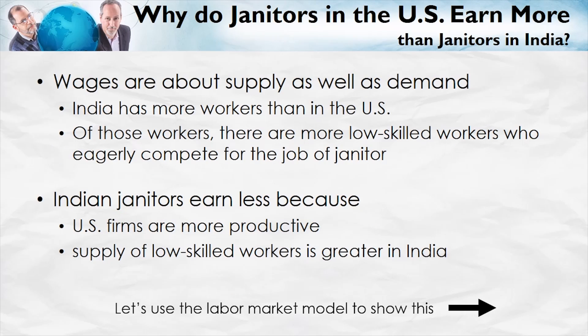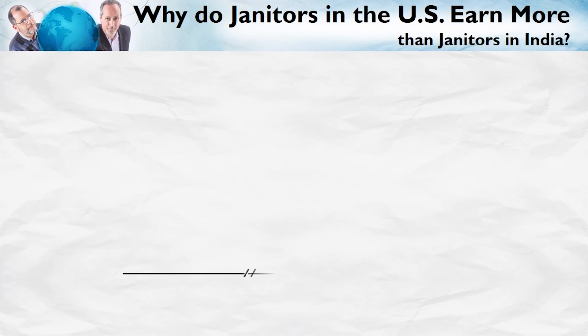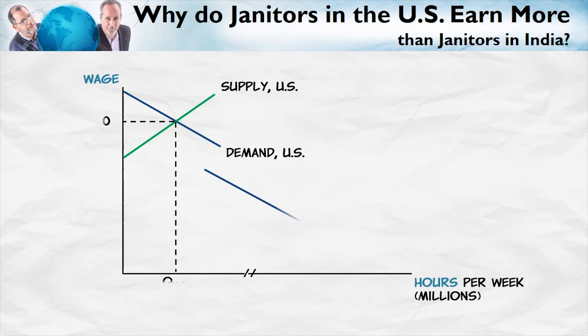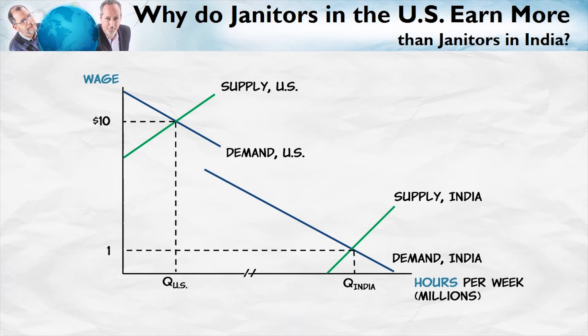Wages are about demand and about supply. India has more workers, and in particular more low-skill workers who eagerly compete for the job of janitor — a janitorial job can actually be quite a well-respected, high-paying job in India. So Indian janitors earn less because US firms are more productive — the demand for labor is higher in the US — and also because the supply of low-skilled workers is greater in India. Here's a graph summarizing this: demand is higher and supply is lower in the United States, producing a higher wage. Next time we'll look at factors which can increase wages, particularly human capital, and then we'll turn to discrimination and other topics.